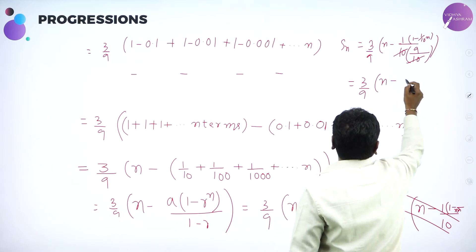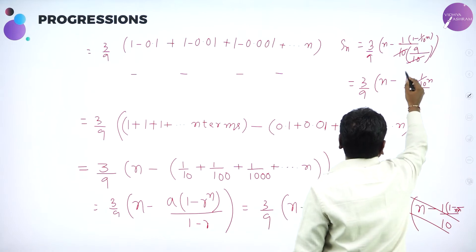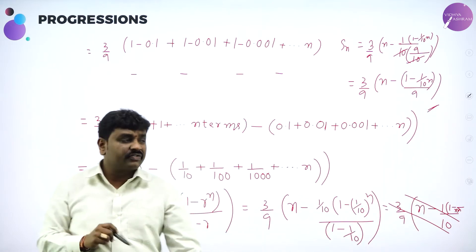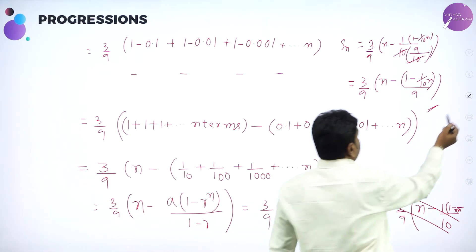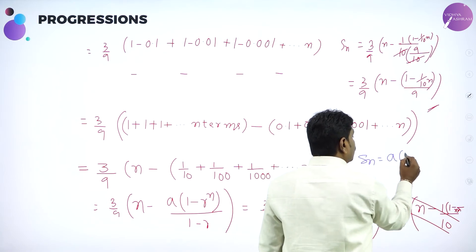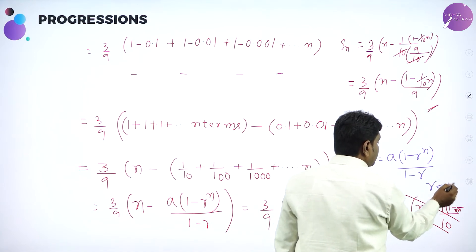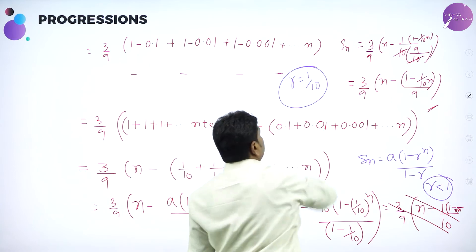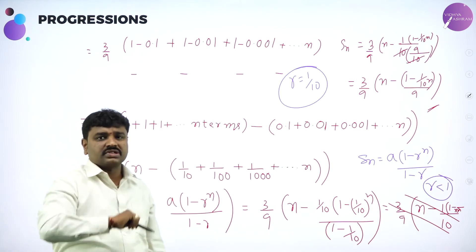Sum of n terms in GP (when r < 1) is: A × (1 − r^n) / (1 − r). Here A = 1/10, r = 1/10. Substituting and simplifying: (1/10) × (1 − (1/10)^n) / (1 − 1/10) — where 1 minus 1/10 gives 9/10, simplifying to 10/9. Final answer: 3/9 × [n − (1 − (1/10)^n) / 9]. Here I am using the SN formula with r < 1 because common ratio is 1/10, which is less than 1.